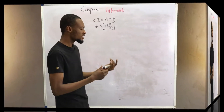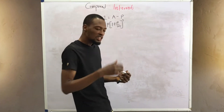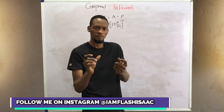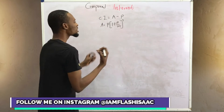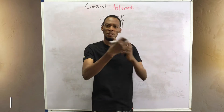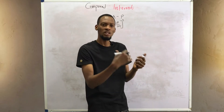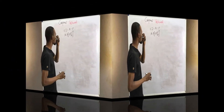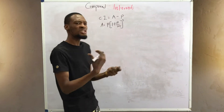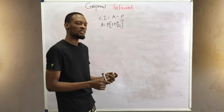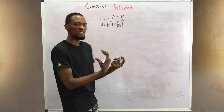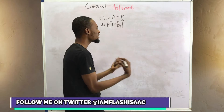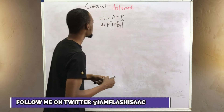In simple interest, the principal — the money you borrow or the amount invested — is fixed. So for every year you keep paying fixed interest on that particular capital; the capital doesn't change. But compound interest is different: in compound interest, interest is paid on interest, so your capital changes and your interest grows. It's reinvesting your interest.